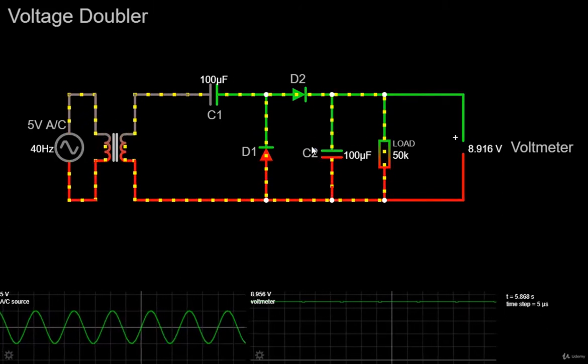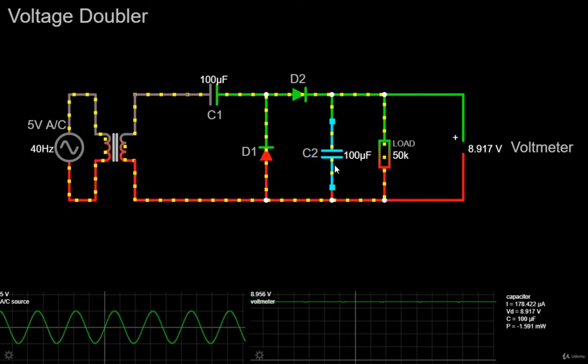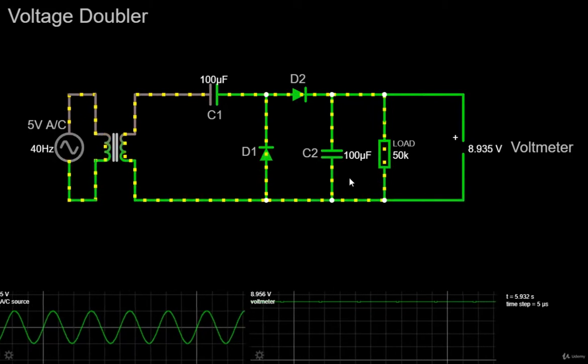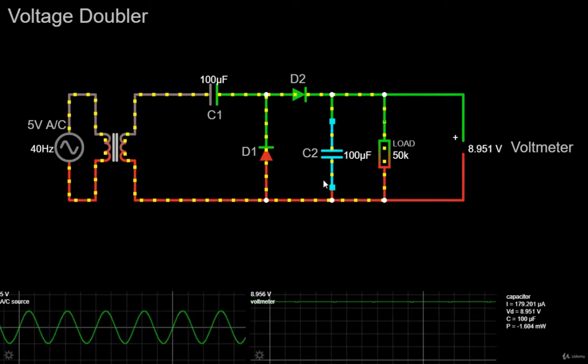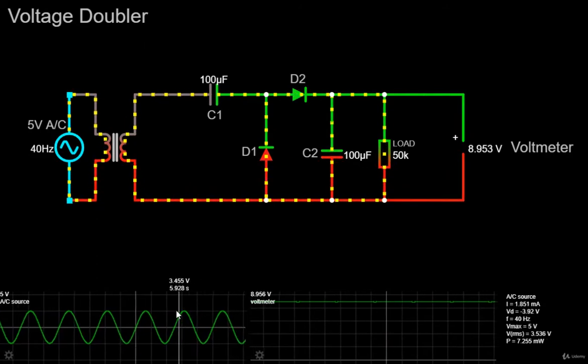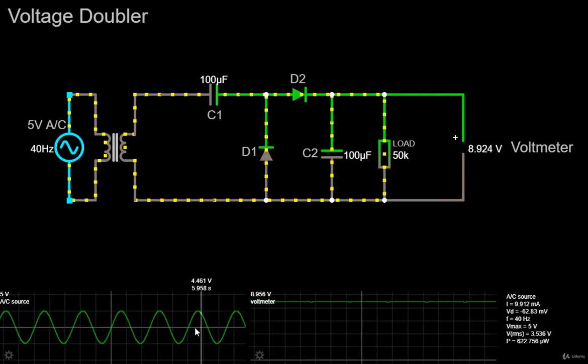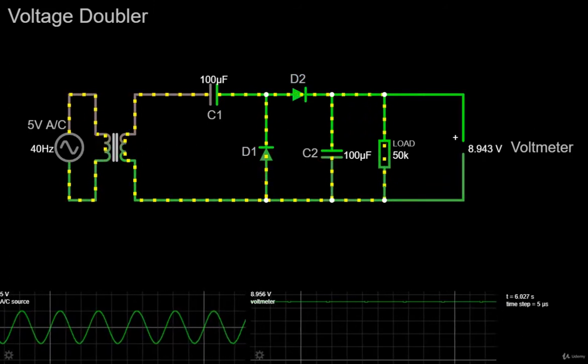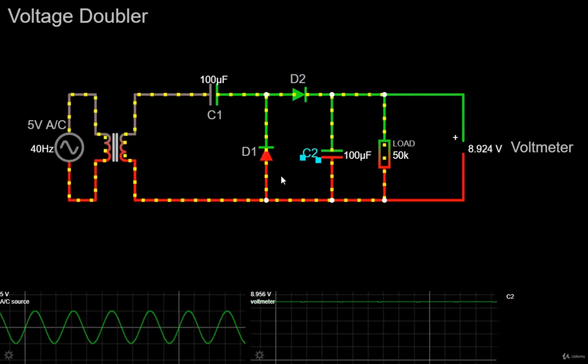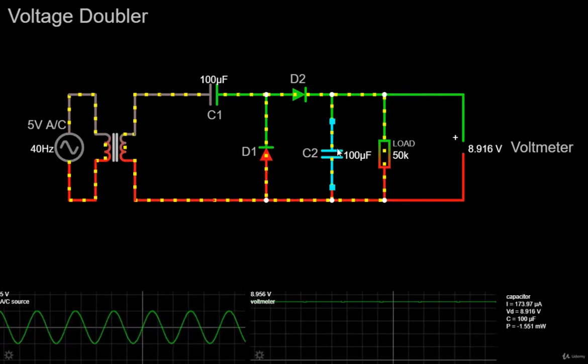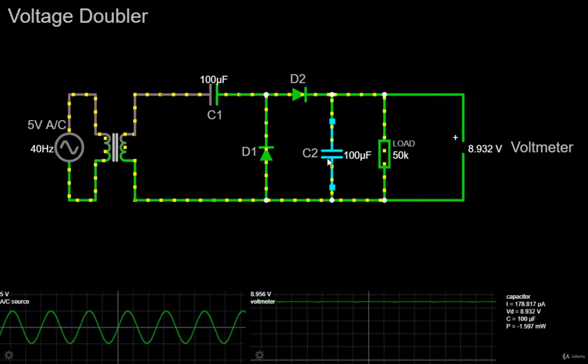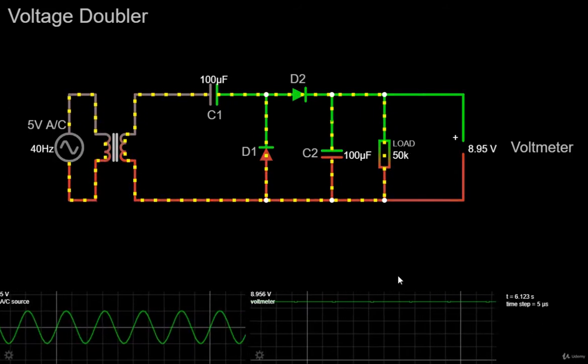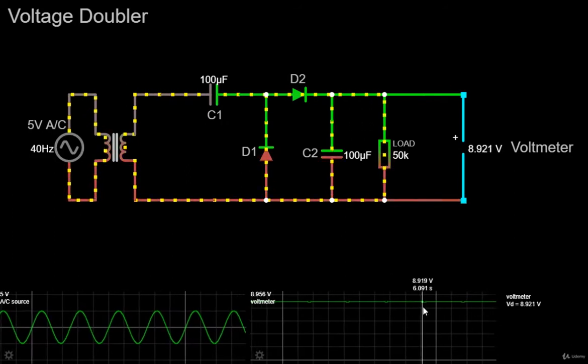The voltage across capacitor C2 discharges through the load ready for the next half-cycle. Then, the voltage across capacitor C2 can be calculated as two times the peak value of the input voltage minus, of course, the voltage drops across the diodes used. As capacitor C2 only charges up during the half-cycle of the input waveform, the resulting output voltage discharged into the load has a ripple frequency equal to the supply frequency, hence the name half-wave voltage doubler.